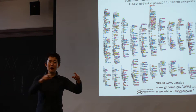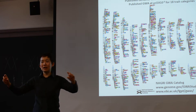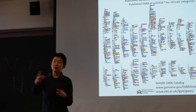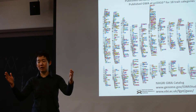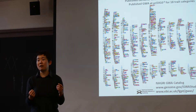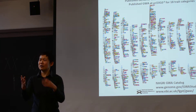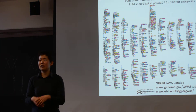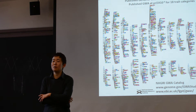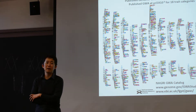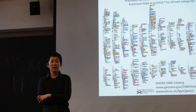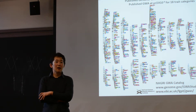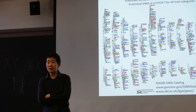Therefore, each read — most of the current read mappers say within the first 50 base pair or 38 base pair, you allow two mismatches, which usually, if you have a SNP, it will still be able to find the right place. Okay. Other questions?